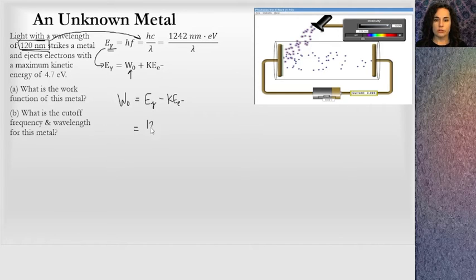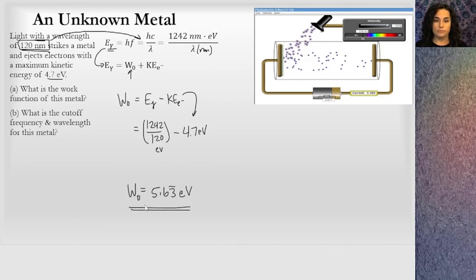The energy of the photon, I'm going to go 1242 over 120. If I have lambda in nanometers, I can just do 1242 nanometers over EVs. This will give me the energy of the photon in EVs. I'd subtract off the 4.7 EVs, that is the kinetic energy. When you run this through your calculator, you get the work function is 5.63 repeating EVs. All I did was conservation of energy. I knew the energy of the photon, I knew the energy of that electron, and the difference there had to be whatever was lost to overcoming that work function.